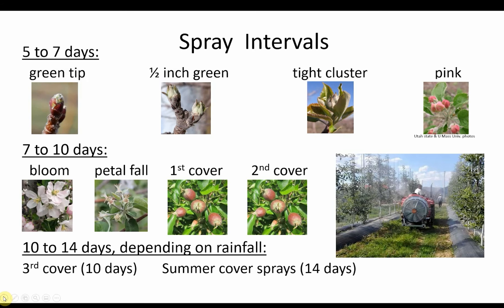The bud stages are also used to describe when to apply various products. From green tip through the pink stage, some products may be applied as frequently as 5 to 7 days. From bloom through about second cover, products may be applied as often as every 7 to 10 days. The first cover spray means that an application is made 7 to 10 days after petal fall, with the second cover spray about a week later. After this, applications are extended to every 10 to 14 days from the third cover spray throughout the summer, depending on whether or not rain occurs.